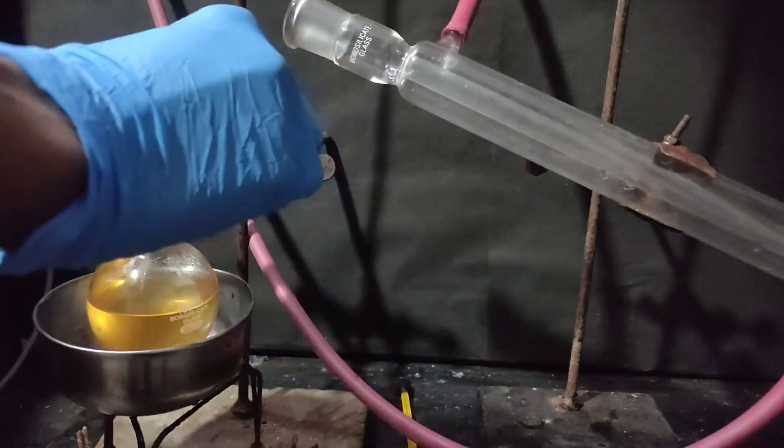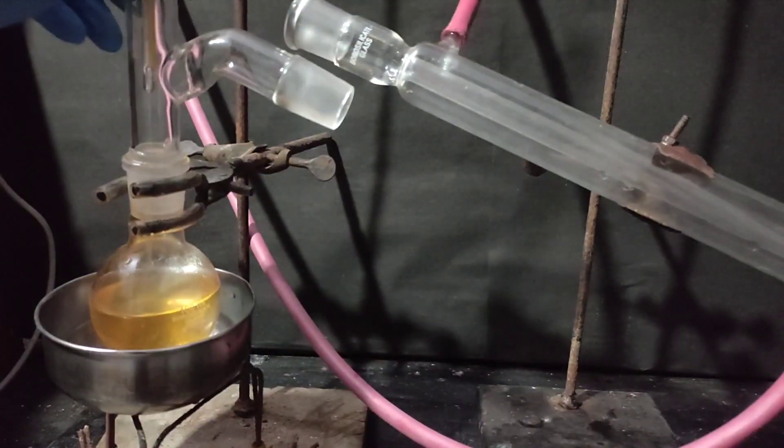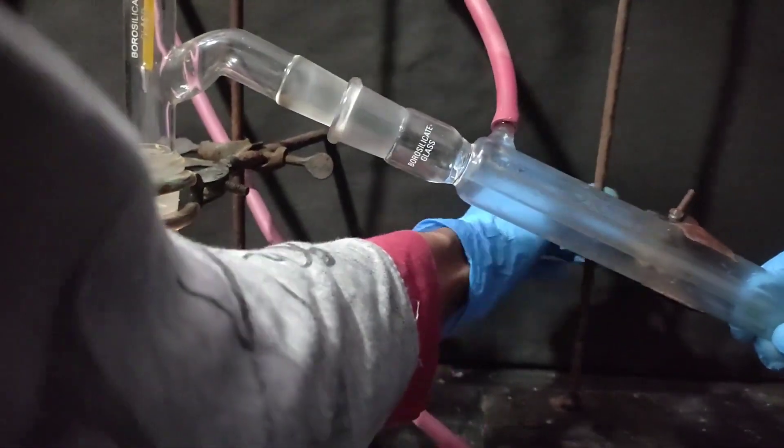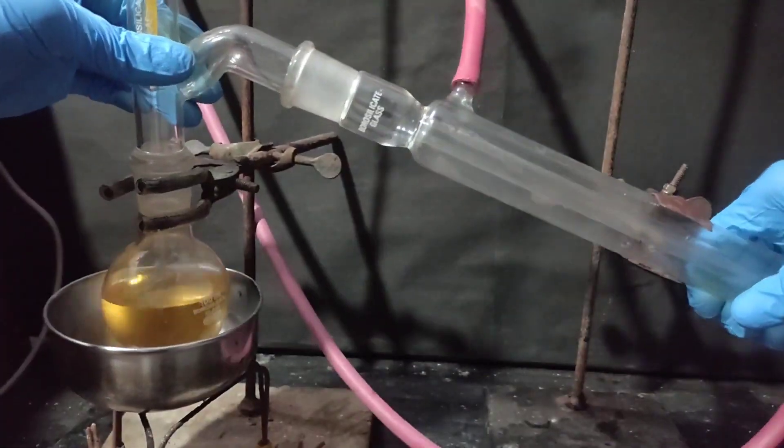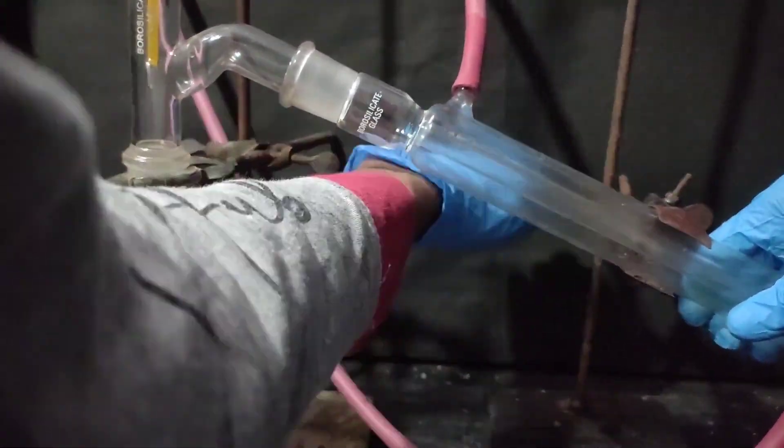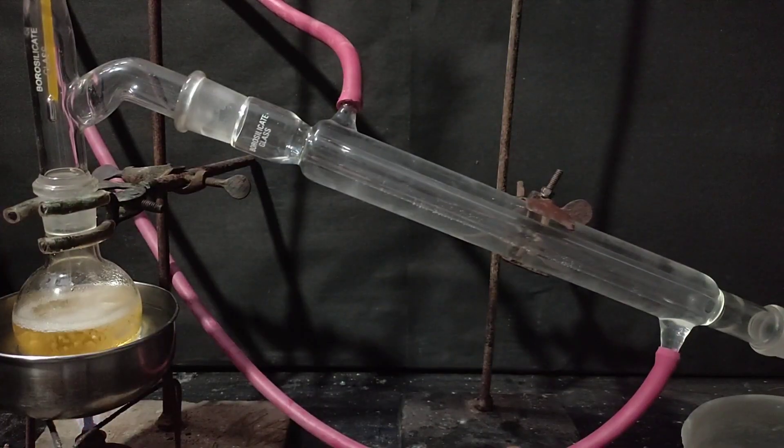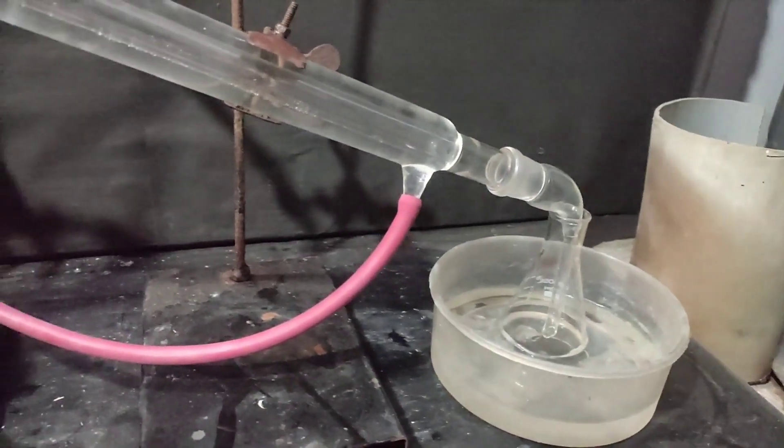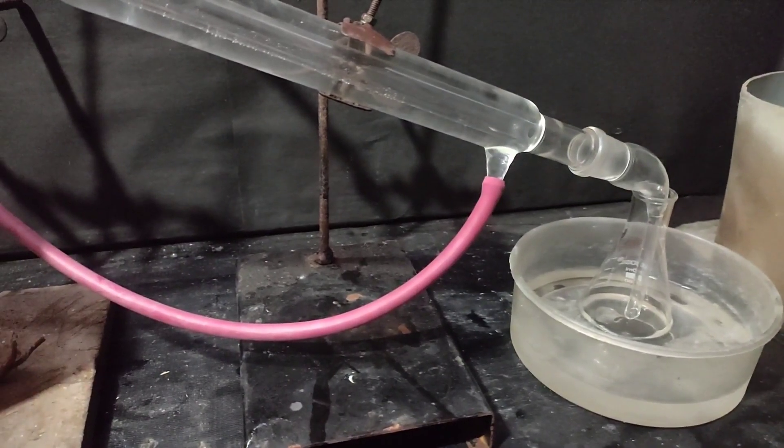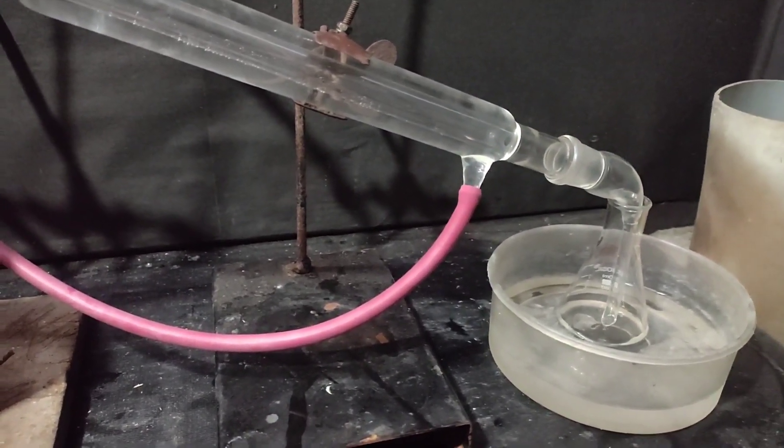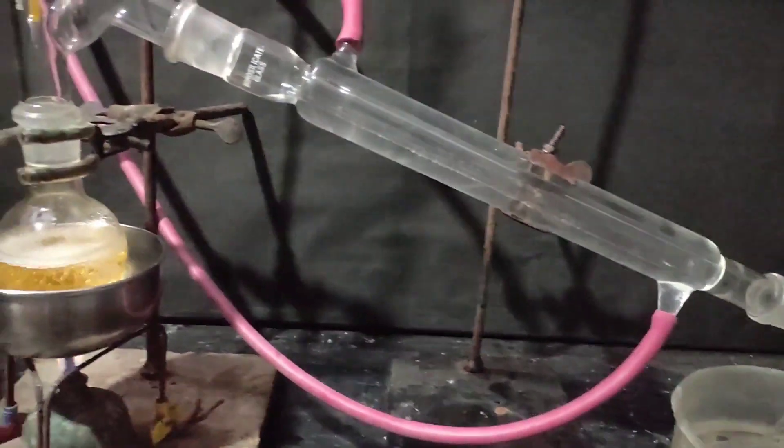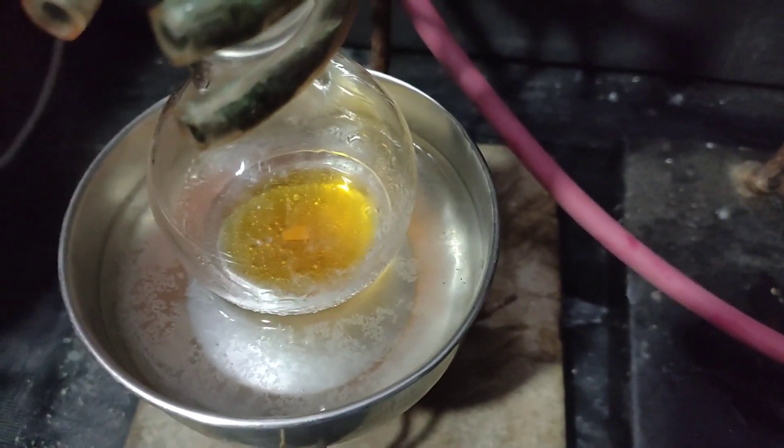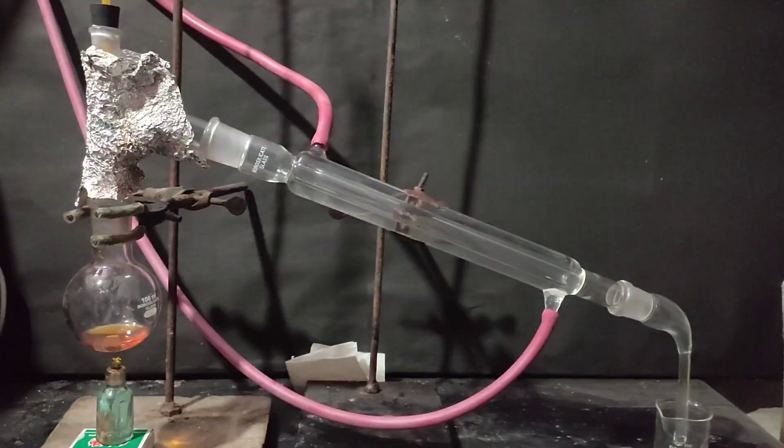Now I placed the flask in a water bath and placed a boiling chip into it. Then I placed a still head with a mercury thermometer and arranged the apparatus for simple distillation. Ice cold water was circulated in the condenser and the water bath was heated. The receiving flask was cooled in an ice bath and the ether was collected. When no more ether was collected and boiling stopped, the water bath was removed.